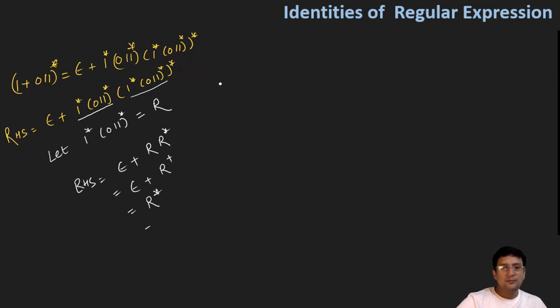So the right-hand side is r closure, and I can write it as one star, zero one one and its closure, and the closure of everything.